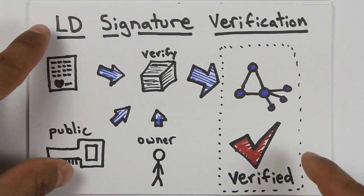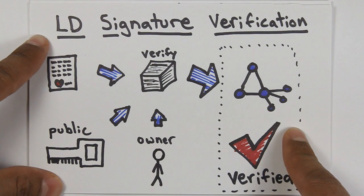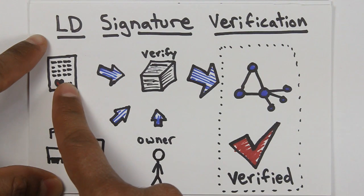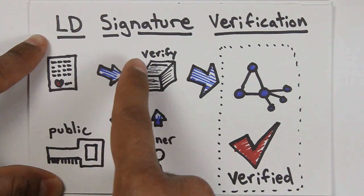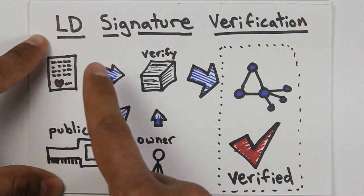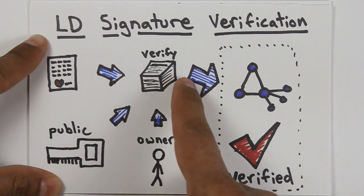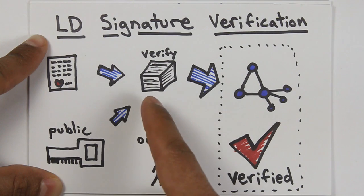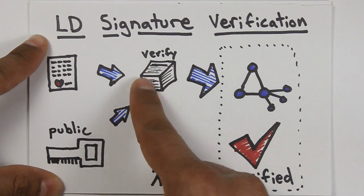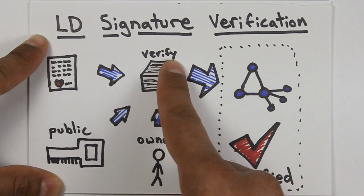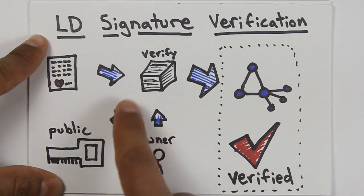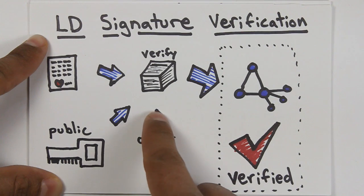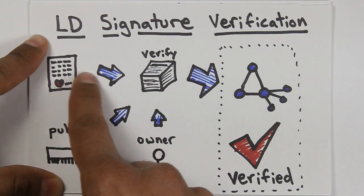Let's take a look at what the verification process looks like once the signature has been created. The idea here is that this document has been created at some point, sent over the internet or the web, received by the receiver, and now the receiver wants to verify the information. The inputs to the verification algorithm, the verification process, are the public key that's associated with the private key and who the owner of that public key is, along with the message that it received.